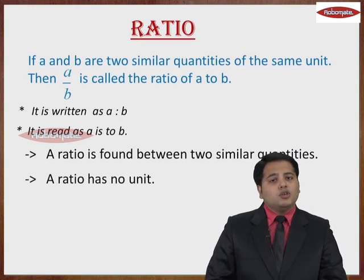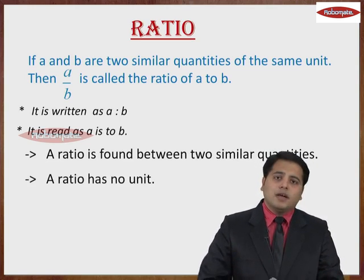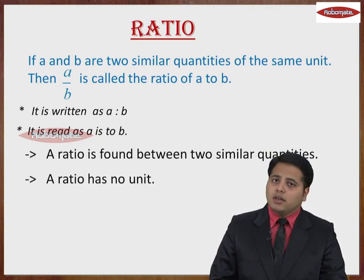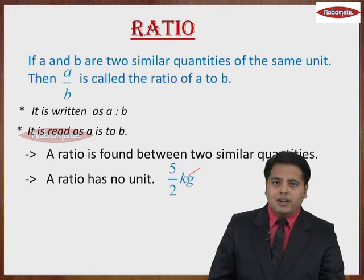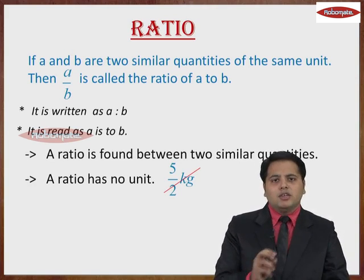The next, Ratio has no unit. For example, when comparing 2 weights, if you get the ratio as 5 upon 2, we do not say it is 5 upon 2 kgs. It is just simply, 5 is to 2.